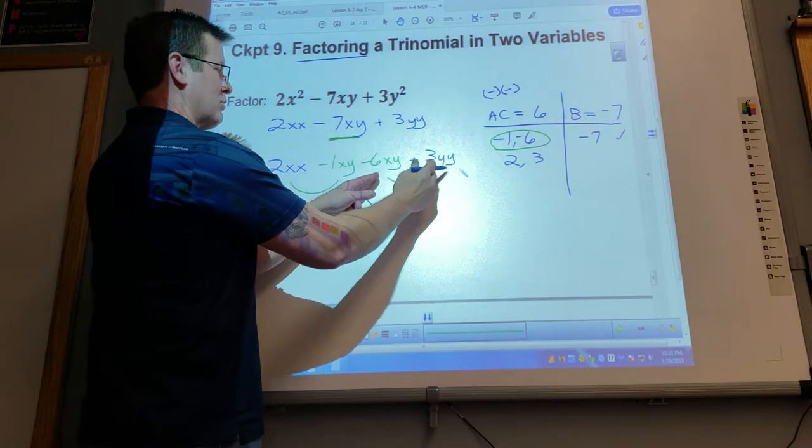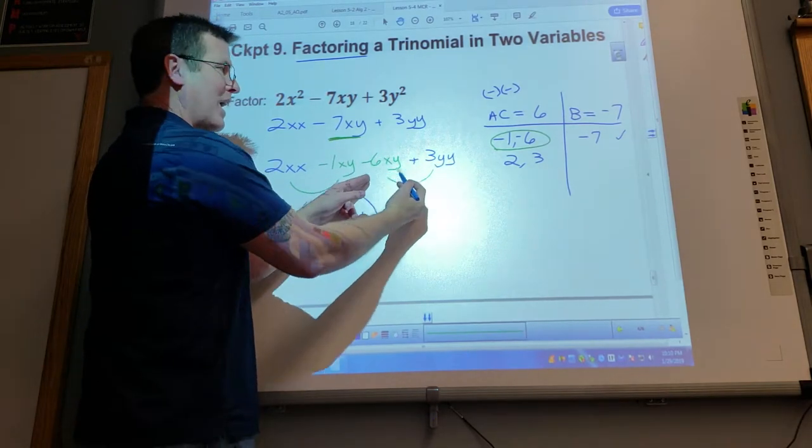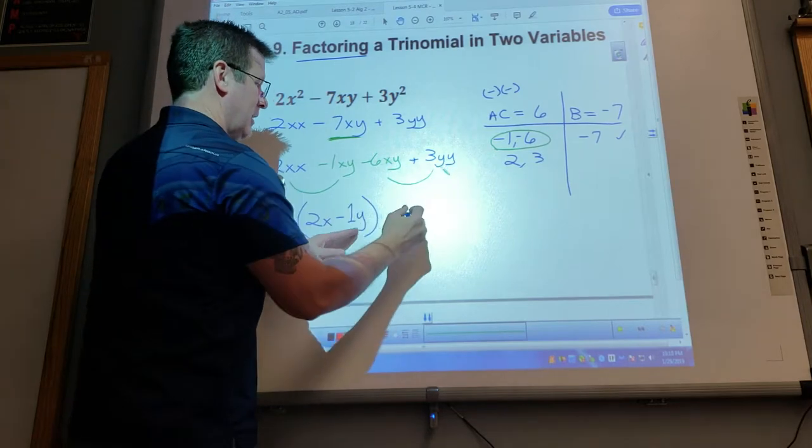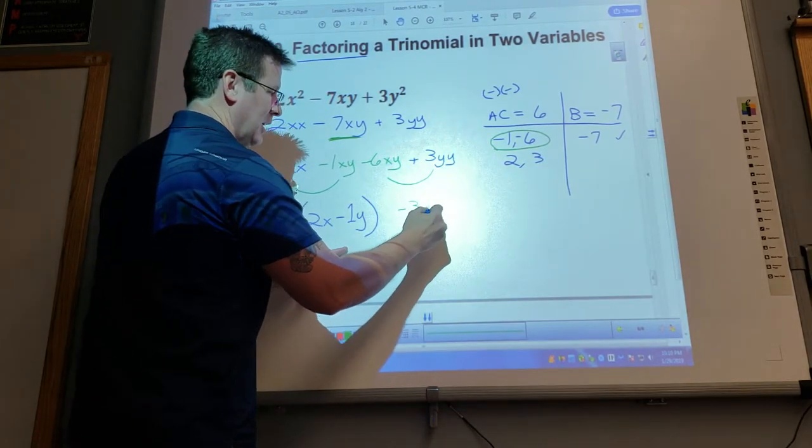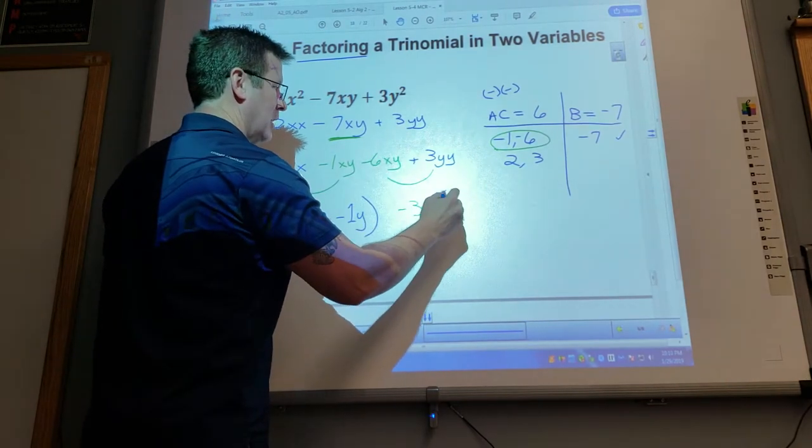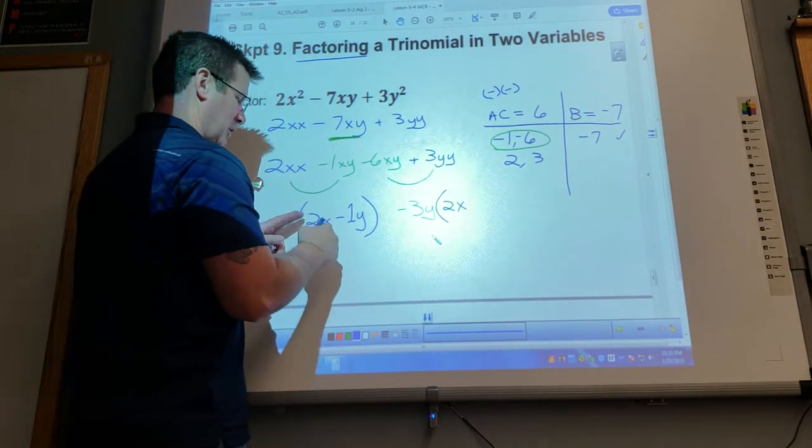What do I factor out of this? And remember, we said if this is negative, I really need to factor out a negative. So negative 3Y. What's left over? That goes in there twice.